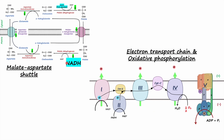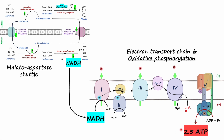Once NADH is regenerated in the mitochondria through the malate-aspartate shuttle, this NADH gives up its electrons to complex I. The electrons from complex I then travel from complex I to coenzyme Q, to complex III, to cytochrome C, to complex IV, and finally to the final electron acceptor, oxygen. During this process, protons are pumped out from the mitochondrial matrix into the inner intermembrane space, and these protons then pass through complex V, which is the ATP synthase enzyme. When electrons pass through ATP synthase, ADP is phosphorylated to synthesize ATP, and one NADH is able to synthesize 2.5 molecules of ATP.